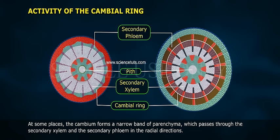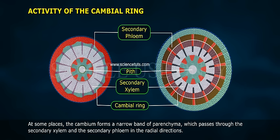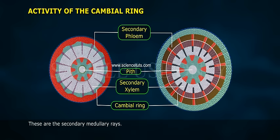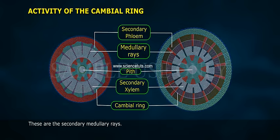At some places, the cambium forms a narrow band of parenchyma which passes through the secondary xylem and secondary phloem in the radial direction. These are called the secondary medullary rays.